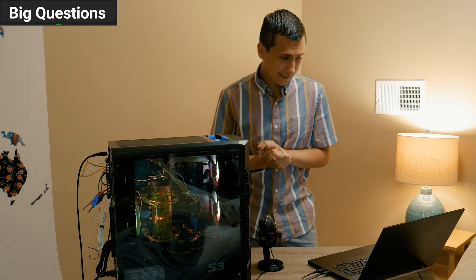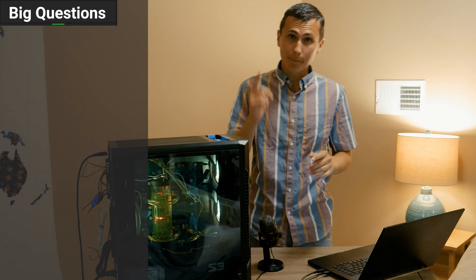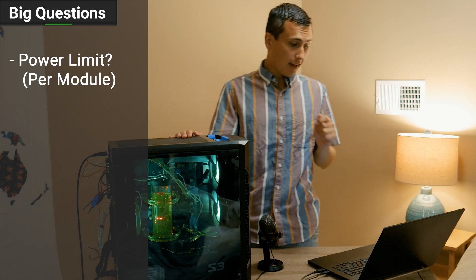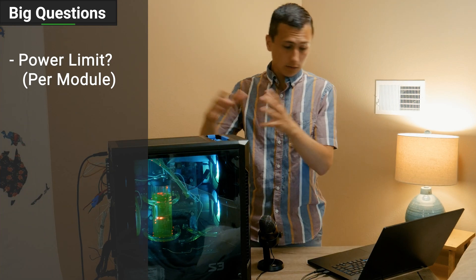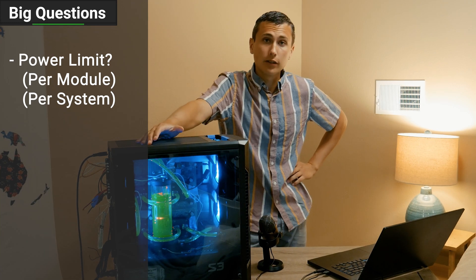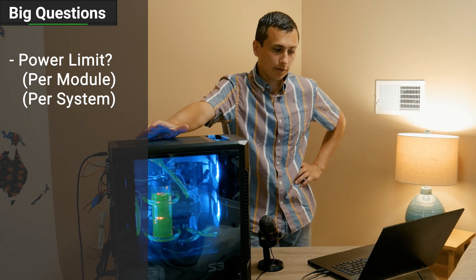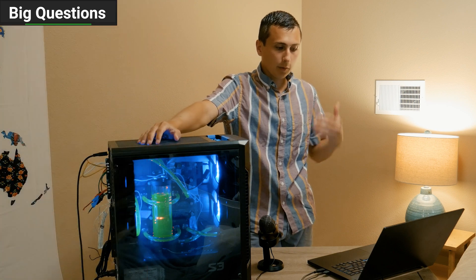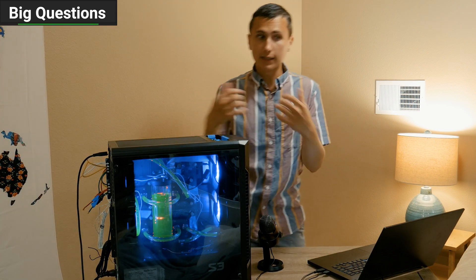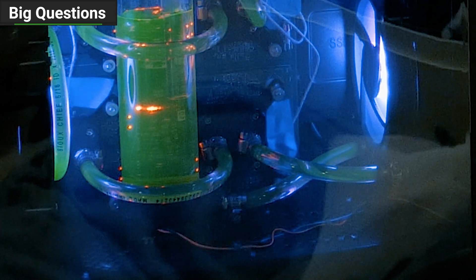There's two big questions that we need to answer today. What is the power limit for a single module, for one of those modules, and what's the power limit for the whole system? The first question is really important because it will likely reveal the thermal interface limit, the thermal performance of the cooling solution for one module. The water is cold, relatively cold. Let's see how good the thermal transfer is from our MOSFET to the water.